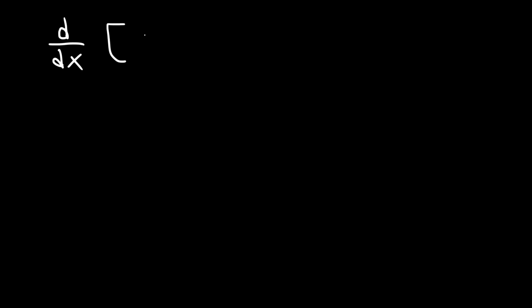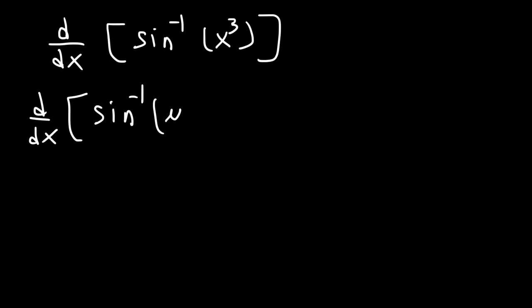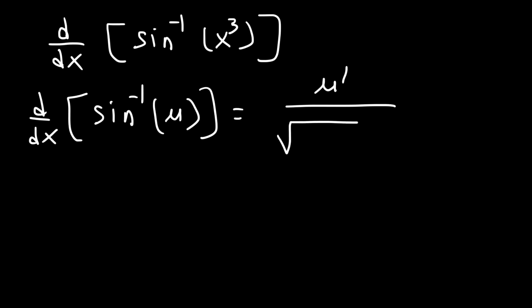What is the derivative of arc sine of x cubed? Go ahead and try this problem. Now you need to know the formula. If you know the formula, life is easy. The derivative of a generic arc sine function — arc sine of u — is equal to u prime divided by the square root of 1 minus u squared.